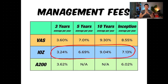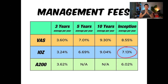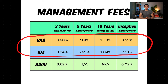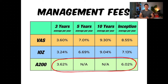Let's move on to IOZ. The 3-year return is 3.24%, the 5-year return is 6.69%, and the 10-year return is 9.04%. Their inception date is the 6th of December 2010, so their 12-year return since inception is 7.13%. These returns are very similar to VAS, and interestingly VAS performed slightly better over the 3, 5, and 10-year periods — this could be due to the extra 100 companies in the fund. Now for A200: the 3-year return is 3.62%, and the 5 and 10-year returns are not applicable because the fund only started on the 7th of May 2018. The return since inception is 6.02%. The reason it's lower than both VAS and IOZ is because of the shorter timeframe — the longer a fund is given to grow, the better it should perform.